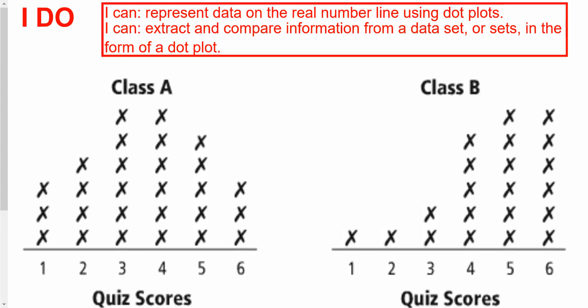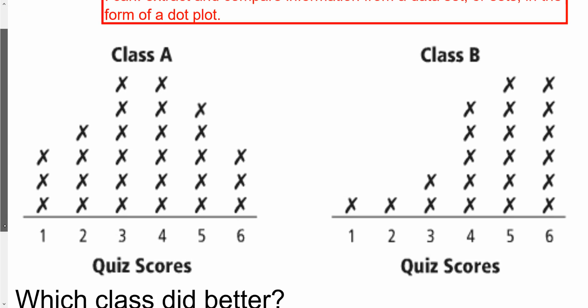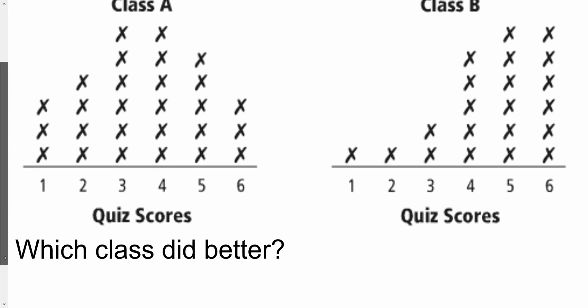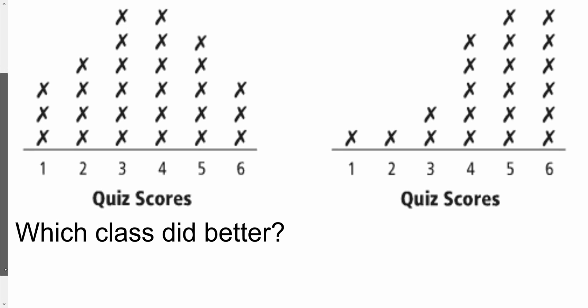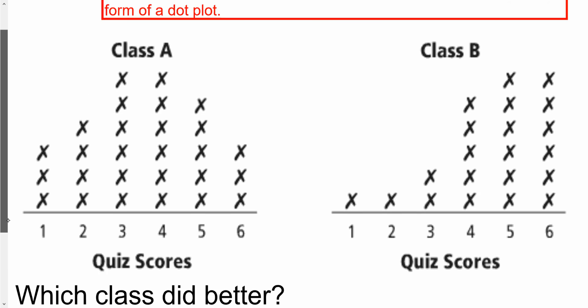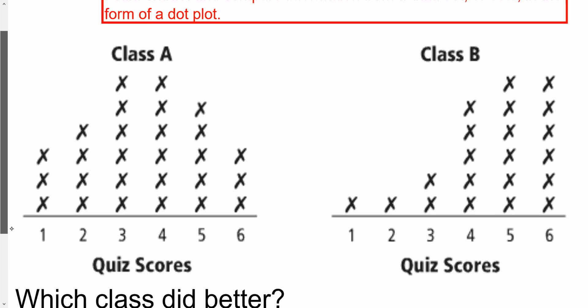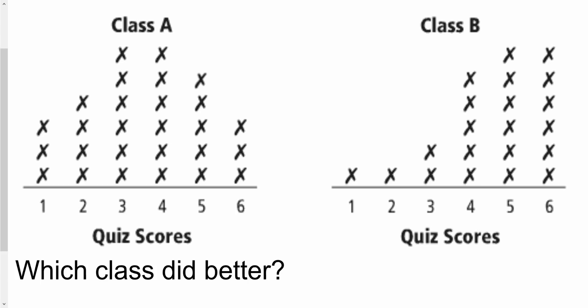So who did score better and how do we know that? Well, we can compare mean, median, mode, and range together. Specifically, we can probably just stick with the mean and the median. The modes are really easy to see here — the mode for Class A is 3 and 4, and the modes for Class B are 5 and 6.